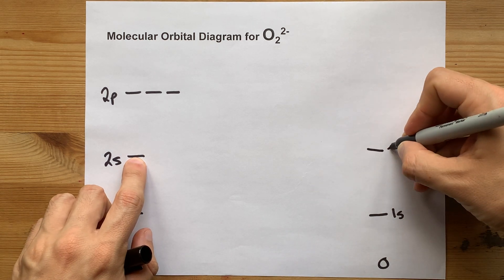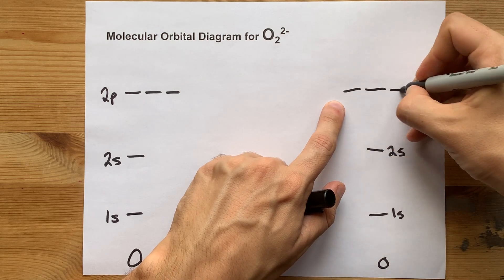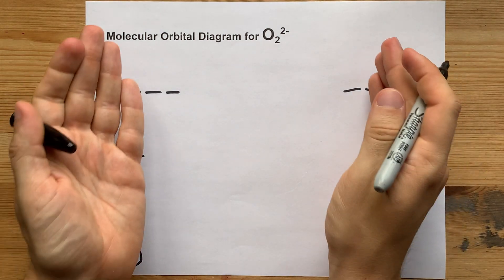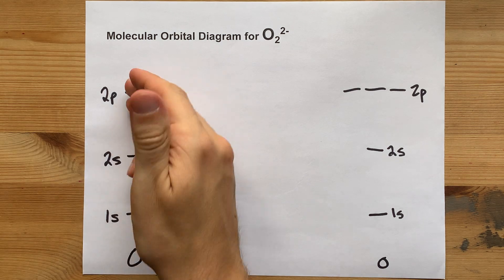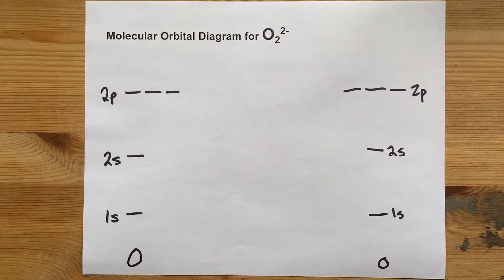They are the same atom, or they're equivalent atoms I should say, so I need my 2p subshells here. This in black are just the atomic orbitals that are going to overlap to make my molecular orbitals.